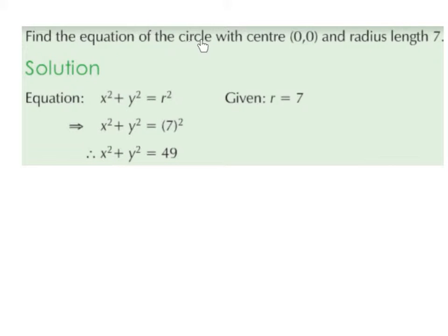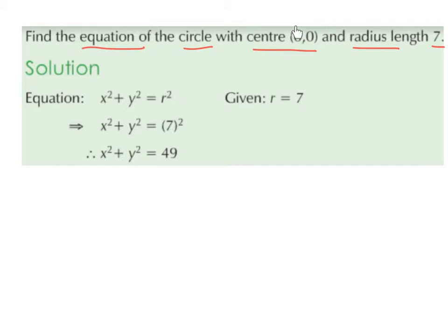Find the equation of the circle with center (0, 0) and radius length 7. We can only use this formula if we have a center of (0, 0).